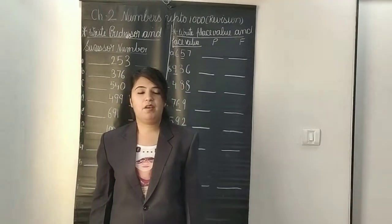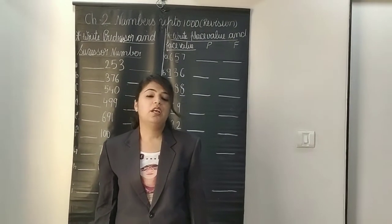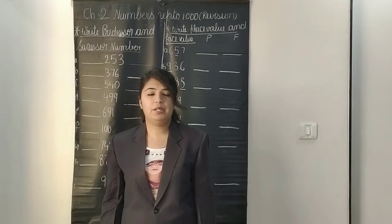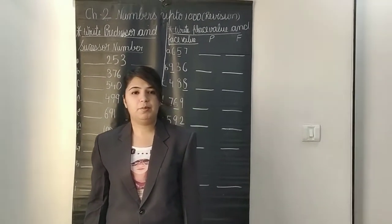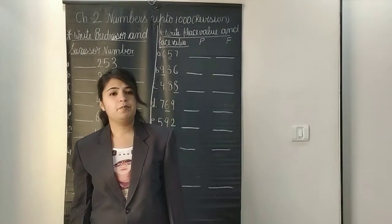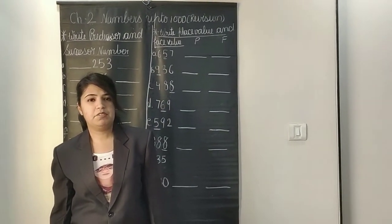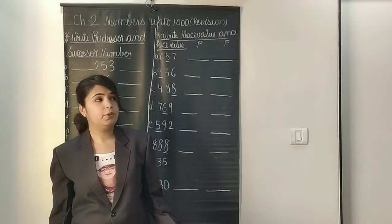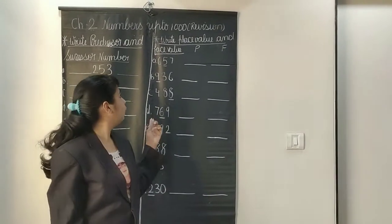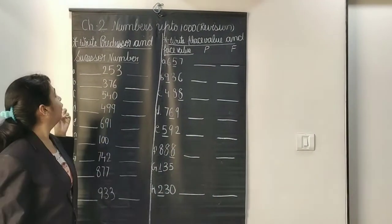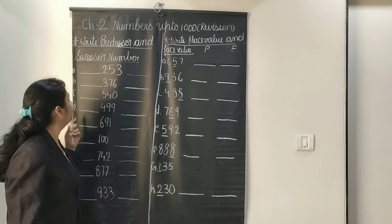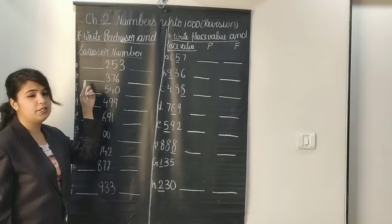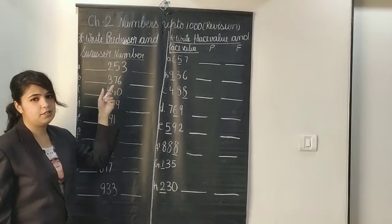In the last class we have learned about chapter number 1, concept of multiplication sums. So now today we will do the revision of chapter number 2, which covers numbers of 2000, from which we are going to do the place value, the face value, and the predecessor and successor numbers.